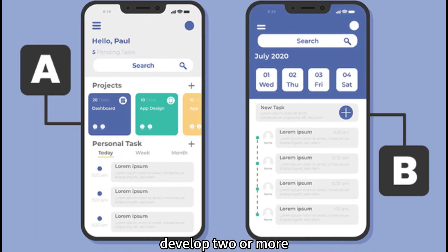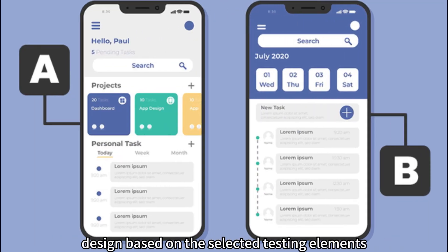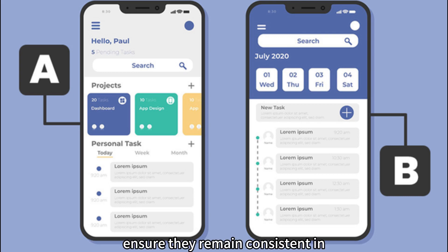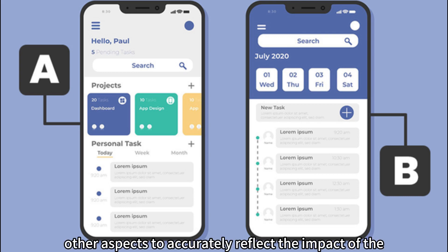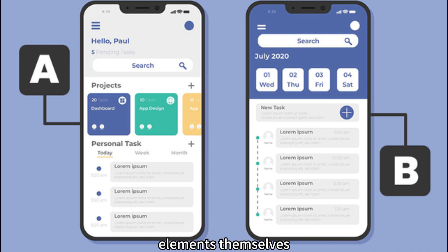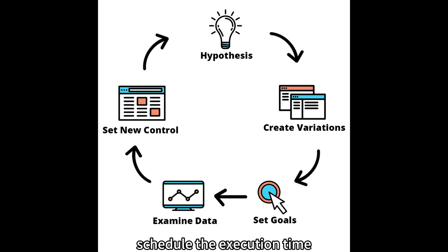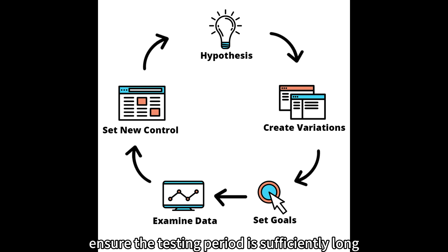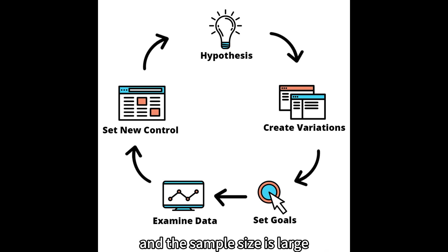Create Testing Versions. Develop two or more different versions of the design based on the selected testing elements. Ensure they remain consistent in other aspects to accurately reflect the impact of the elements themselves. Then design the experiment by scheduling the execution time and sample size of the testing. Ensure the testing period is sufficiently long and the sample size is large enough to obtain reliable results.